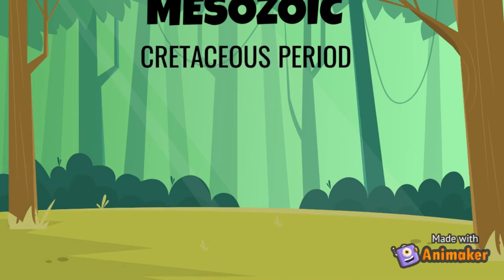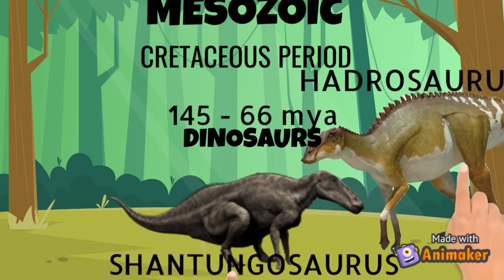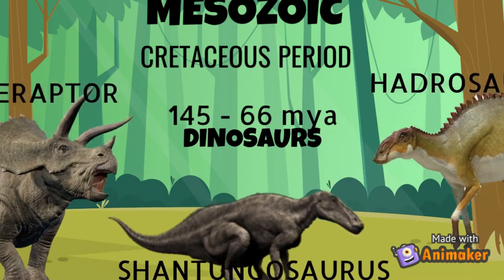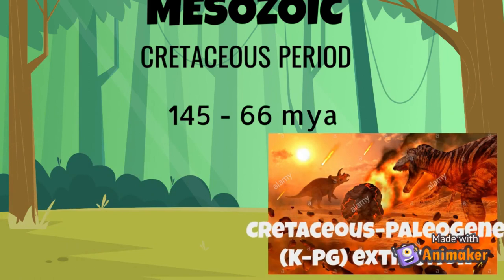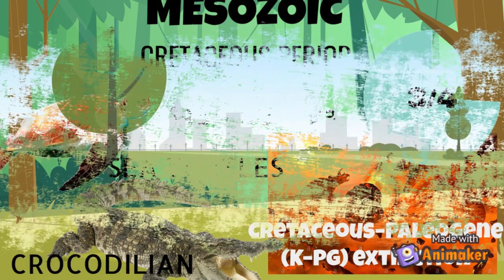The Cretaceous period began 145.0 million years ago and ended 66 million years ago. Dinosaurs were the dominant group of land animals, especially duck-billed dinosaurs and horned forms. The Cretaceous-Paleogene extinction event was a sudden mass extinction of three-quarters of the plant and animal species on Earth, with the exception of some ectothermic species.